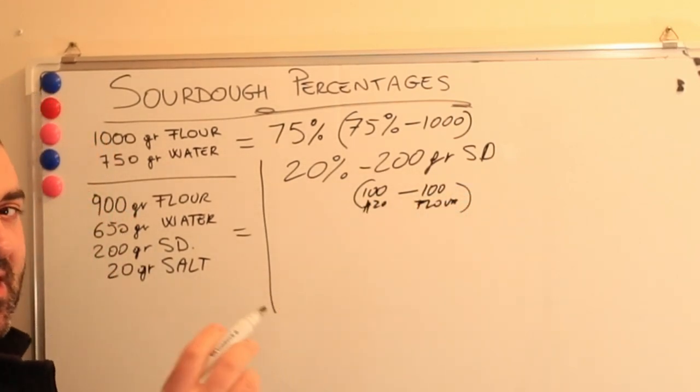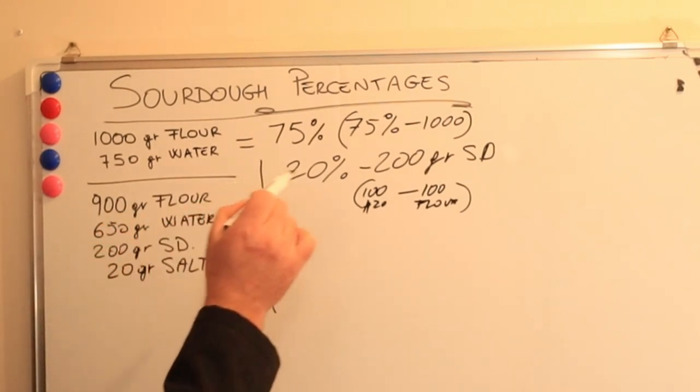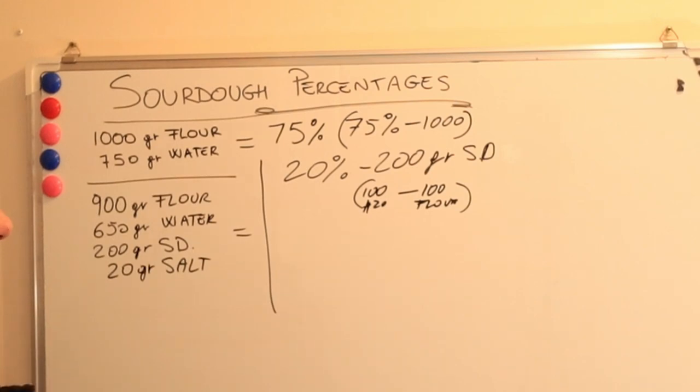So this makes it easier for us because now we need to develop a recipe where we have removed 100 grams of water from the total amount of water, and we need to remove the amount of flour from the amount of flour that we have in the original recipe.